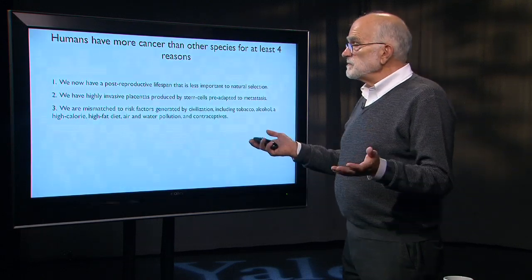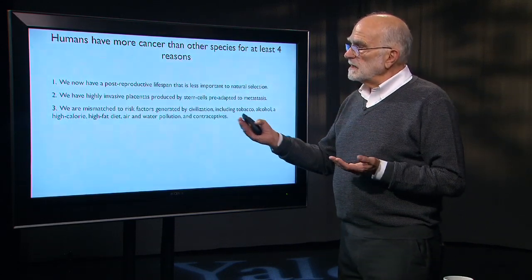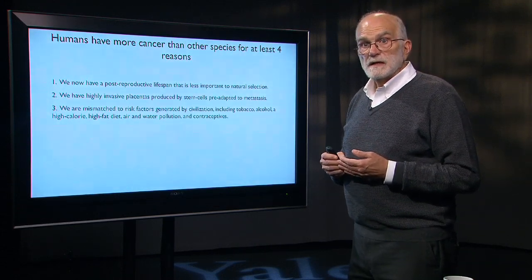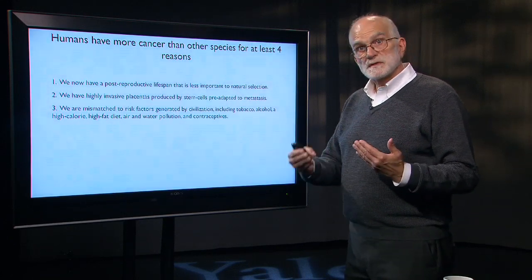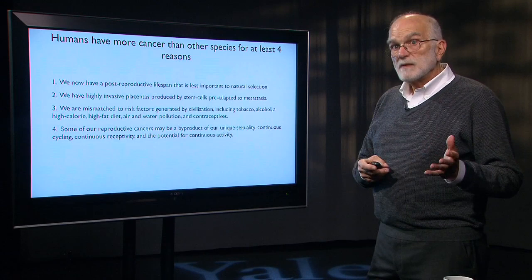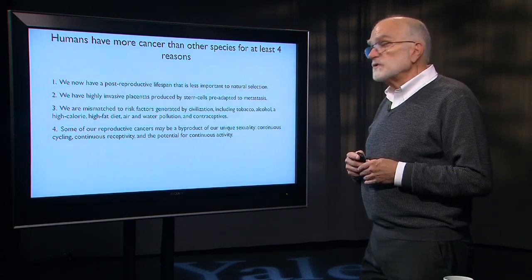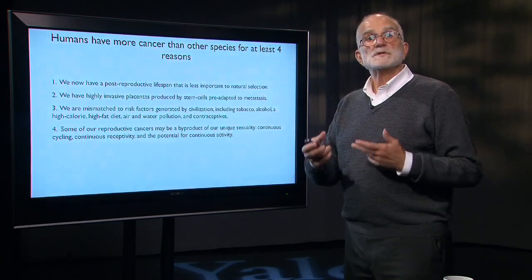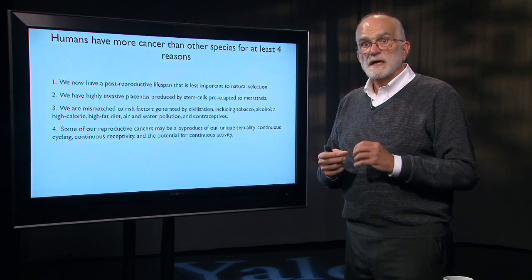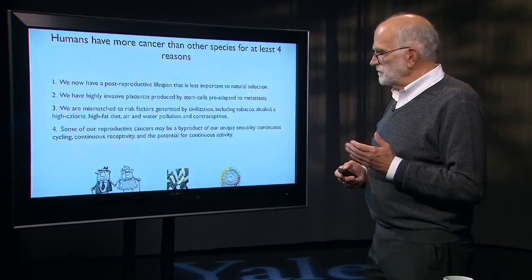A third reason is that we are mismatched to risk factors generated by our culture and civilization — including tobacco, alcohol, a high-calorie high-fat diet, air and water pollution, and contraceptives. These are not things Stone Age hunter-gatherers encountered, and our bodies are not set up to deal with them. We are probably in the process of continuing to adapt to all of them. Fourth, some of our reproductive cancers may be a byproduct of our unique sexuality among primates: continuous cycling, continuous receptivity, and the potential for continuous sexual activity. This means the tissues in all our sex glands and associated organs are continually undergoing mitosis, and every mitotic event is an opportunity for a mutation.